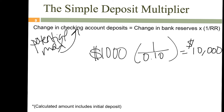Let me make one comment here, because different problems might make different assumptions. This calculation, as performed, is assuming we are including the initial $1,000 deposit in our maximum increase. Some books or problems might want you to remove the initial $1,000. There was a $1,000 deposit that actually happened. At the end of this process, there is a potential $10,000 increase to the money supply — and that $10,000 includes the initial $1,000 deposit. Sometimes questions will ask for the change in the money supply not including the deposit, in which case you would say the money supply grew by $9,000.